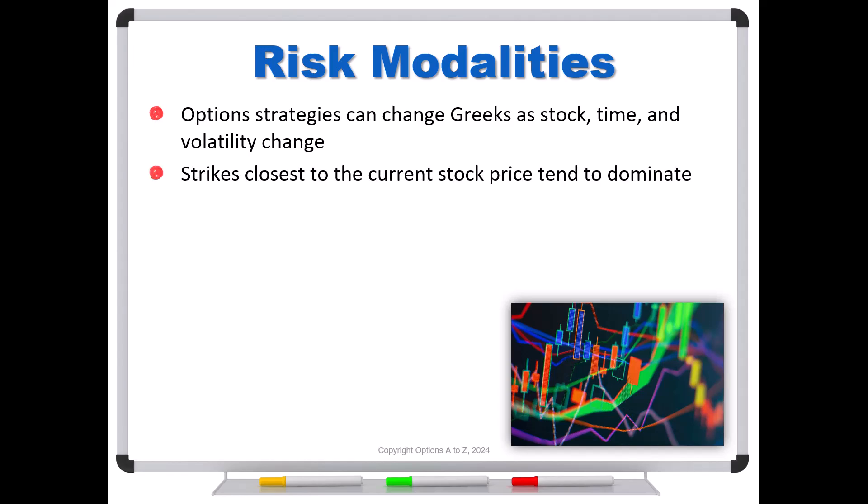Now, as a general rule, your strikes closest to the current stock price tend to dominate. And that's why, for instance, if you have a vertical spread, you've got a long and a short strike. And that's why these risks are going to change as that stock price changes.